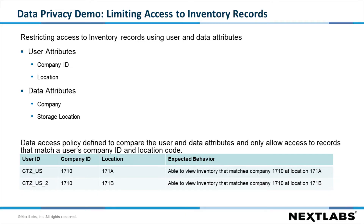In this example, we will see how DAE can be used to limit user access to inventory records. Specifically, we will use the user attributes of company ID and location, and the data attributes of company and storage locations, to limit the inventory records shown to a user to be those that match their location. We will look at two users: the first is CitizenUS, who is in location 171A and will only be able to see the inventory records in storage location 171A. The second user, CitizenUS2, has a location of 171B and will only be able to view the inventory in storage location 171B.